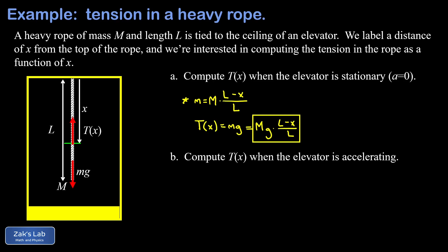And one of those extremes is when x is equal to zero. When x is zero, we get t of zero is equal to big mg times l minus zero divided by l. Well, l minus zero divided by l, that's just one. So our tension reduces to just big mg if x is zero.